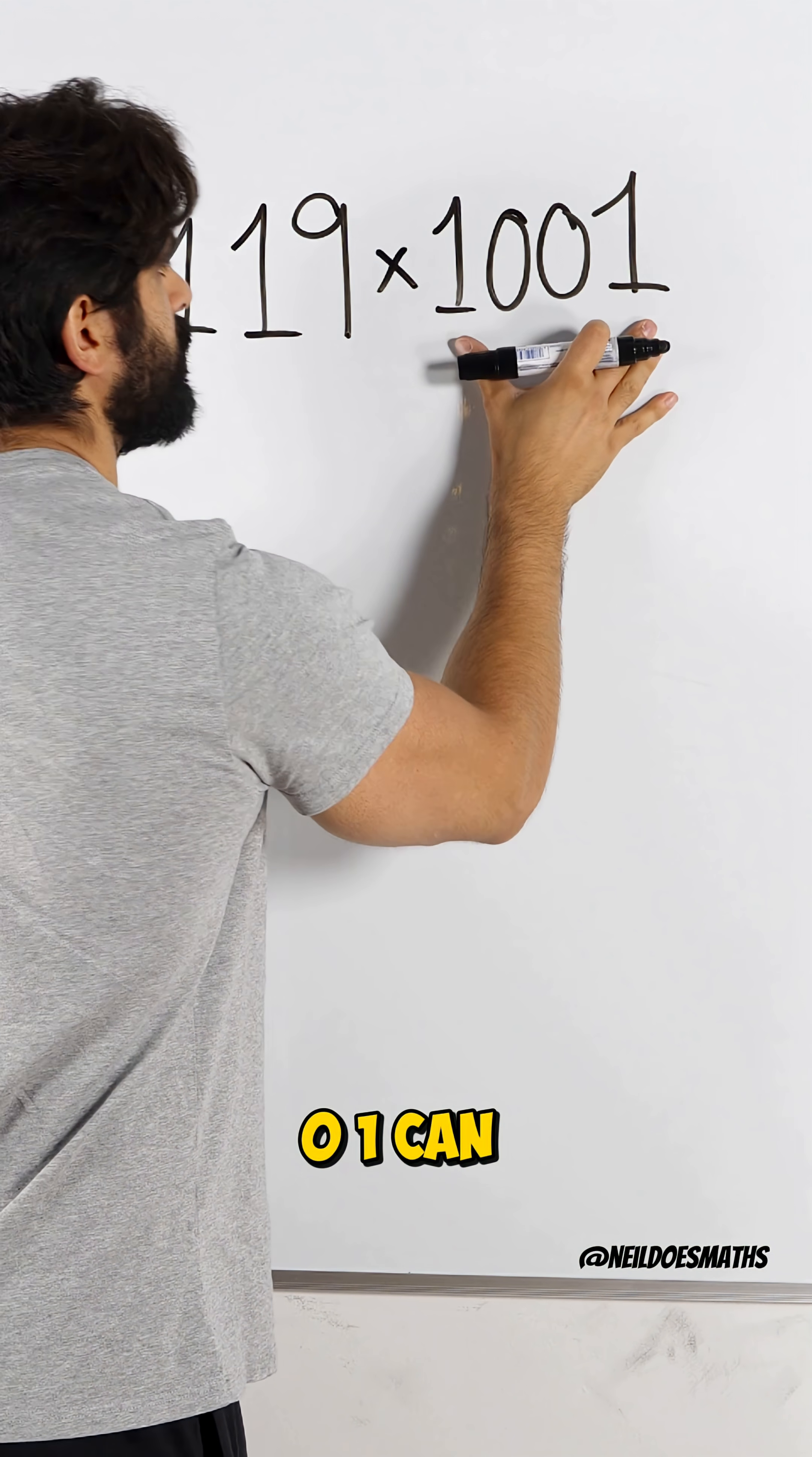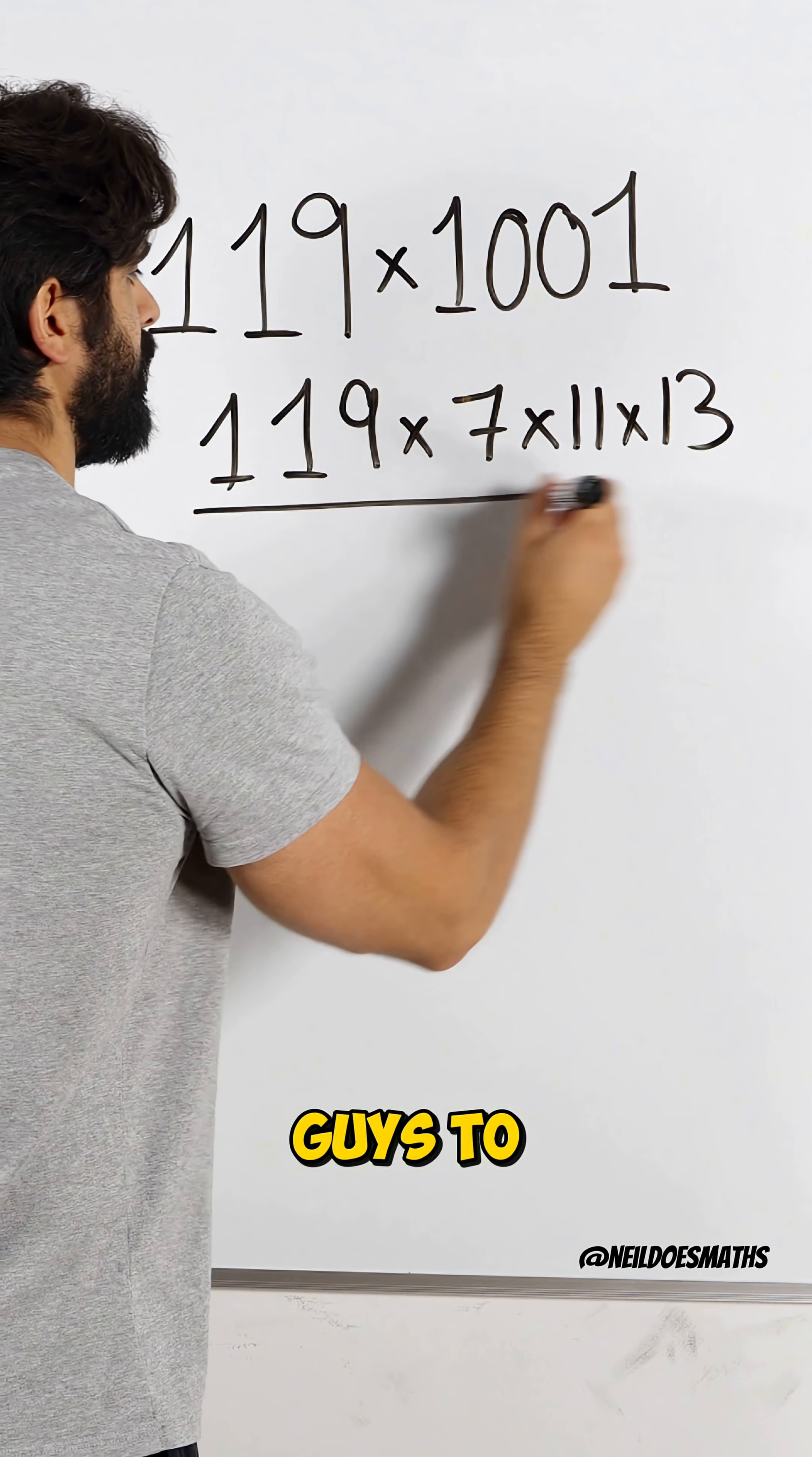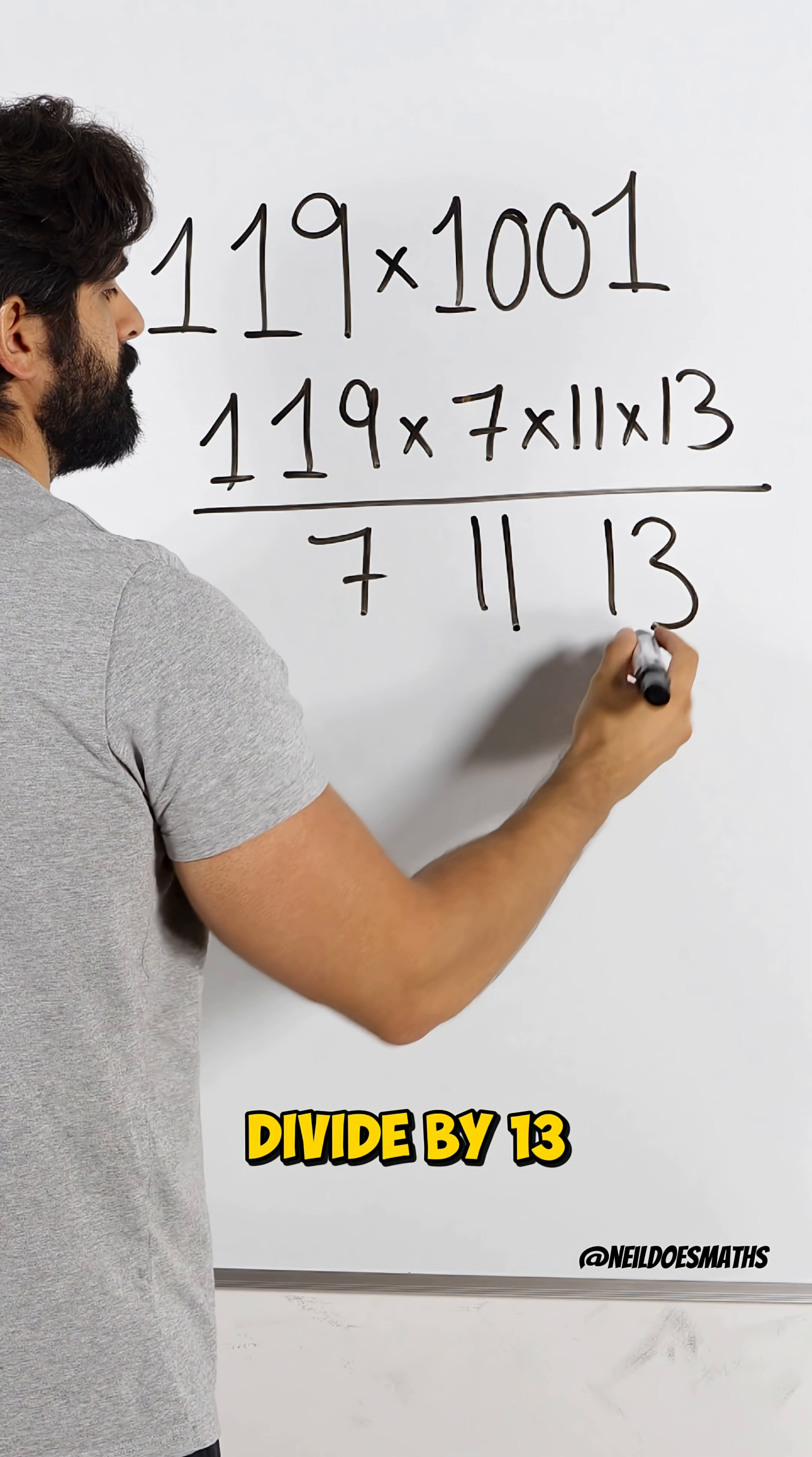And 1001 can be rewritten as the product of prime 7, 11, and 13. So when I told you guys to divide by 7, and then divide by 11, and then divide by 13, in the process,